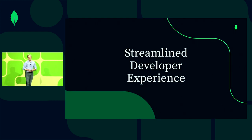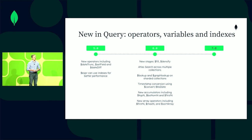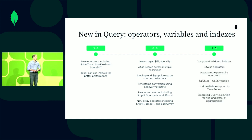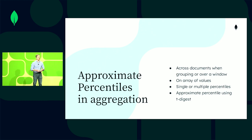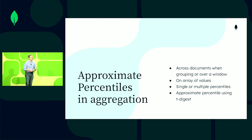Let's dive in on streamlined developer experience. Over the last few years, we've been able to continuously add new features to the query engine — things like $fill and $densify to make time series easier to use, the ability to look up sharded collection data, and to sort and filter on specific data. In 7.0, we've got a host of new operators, variables, and indexes.